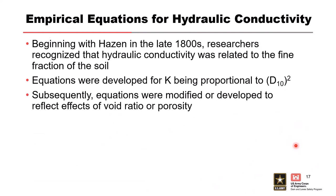Beginning with Hazen in the late 1800s — he published from the 1890s to around 1911 — he recognized that hydraulic conductivity was related to the fine fraction of the soil. Hazen developed equations for K being proportional to the D10 of the material. Those equations were then modified to reflect the effects of void ratio, porosity, angularity of the soil, and other factors.